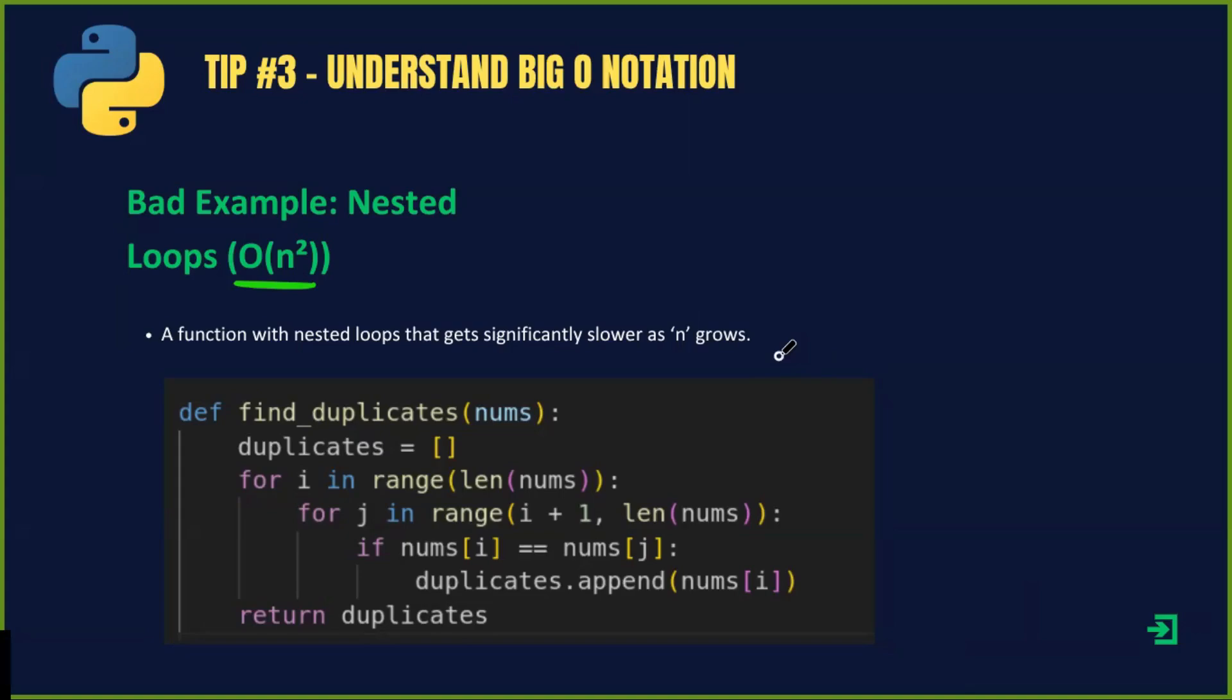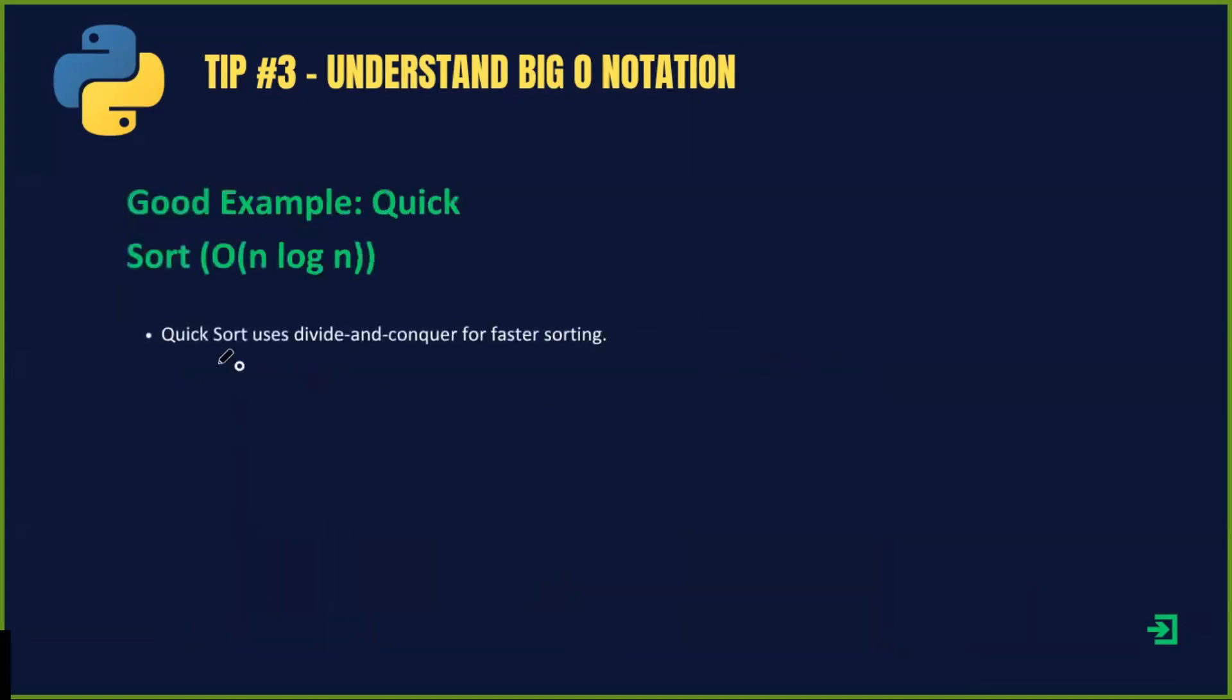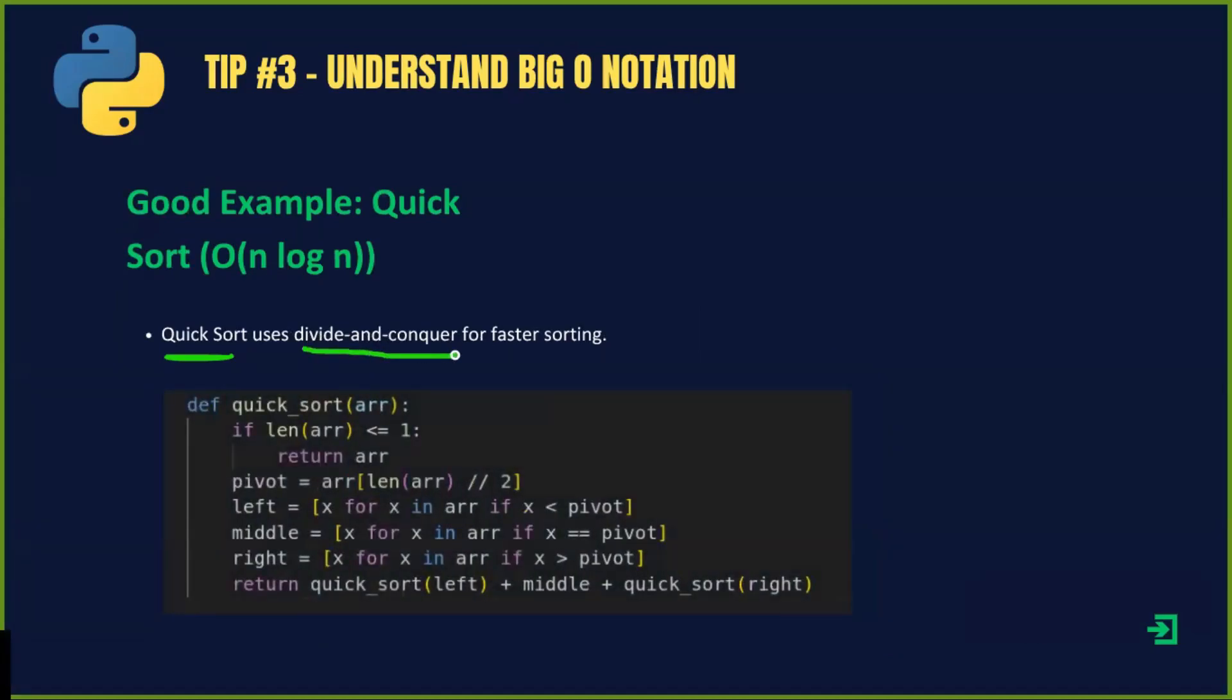Instead, we can use a more efficient approach. A better way to sort this is quicksort, which runs in Big O(n log n) time. By using divide and conquer, quicksort runs much faster than nested loops.